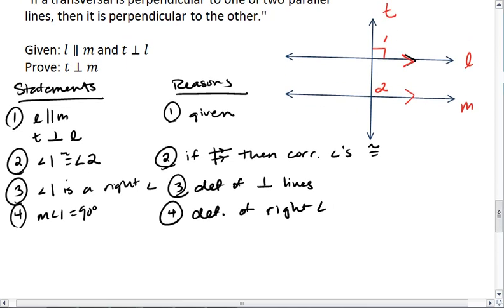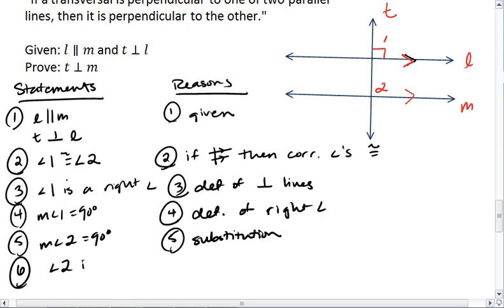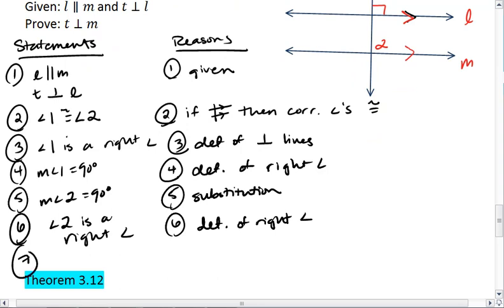I also know that the measure of angle 2 is 90 degrees through substitution. Therefore, angle 2 is a right angle by definition of a right angle, and so t is perpendicular to m by definition of perpendicular lines.